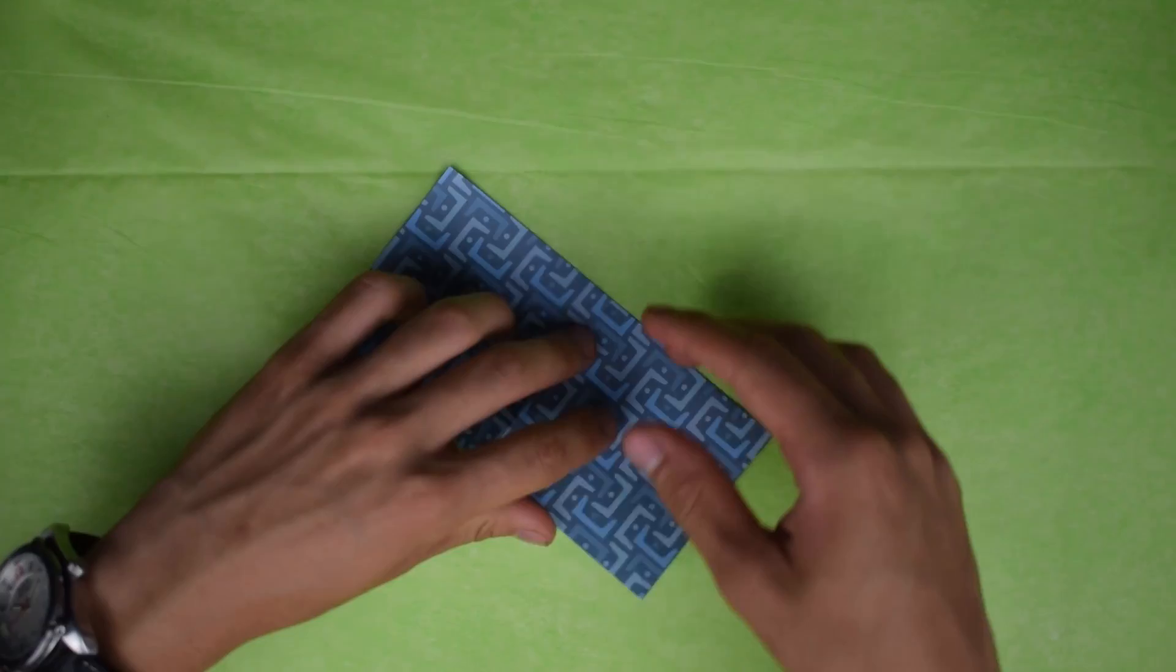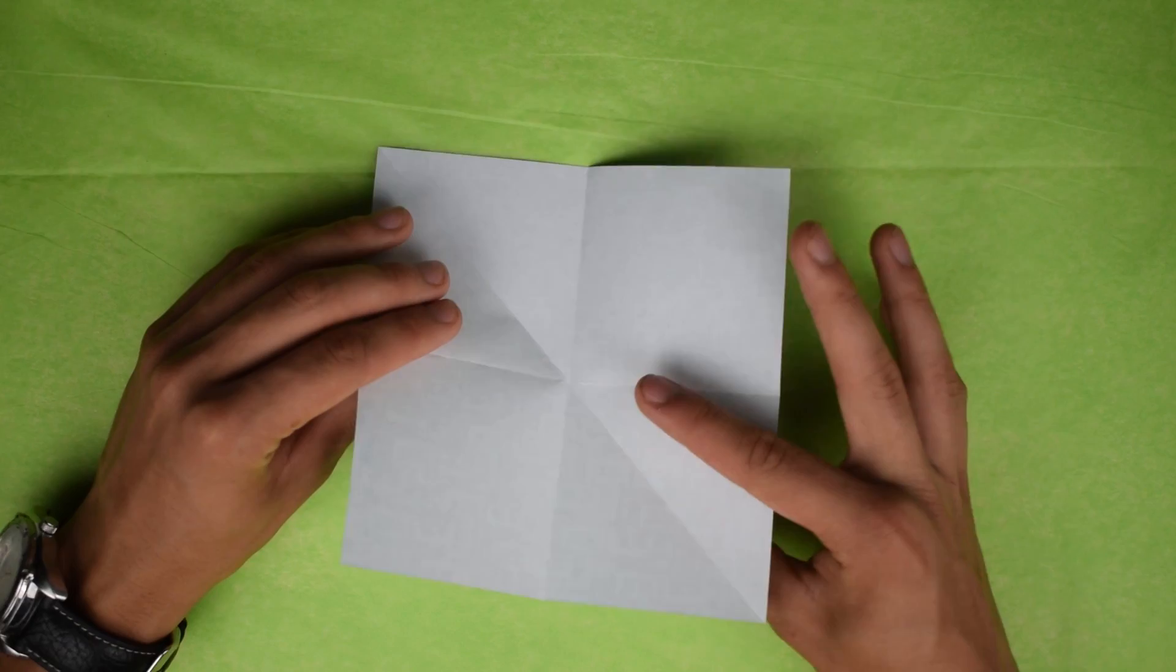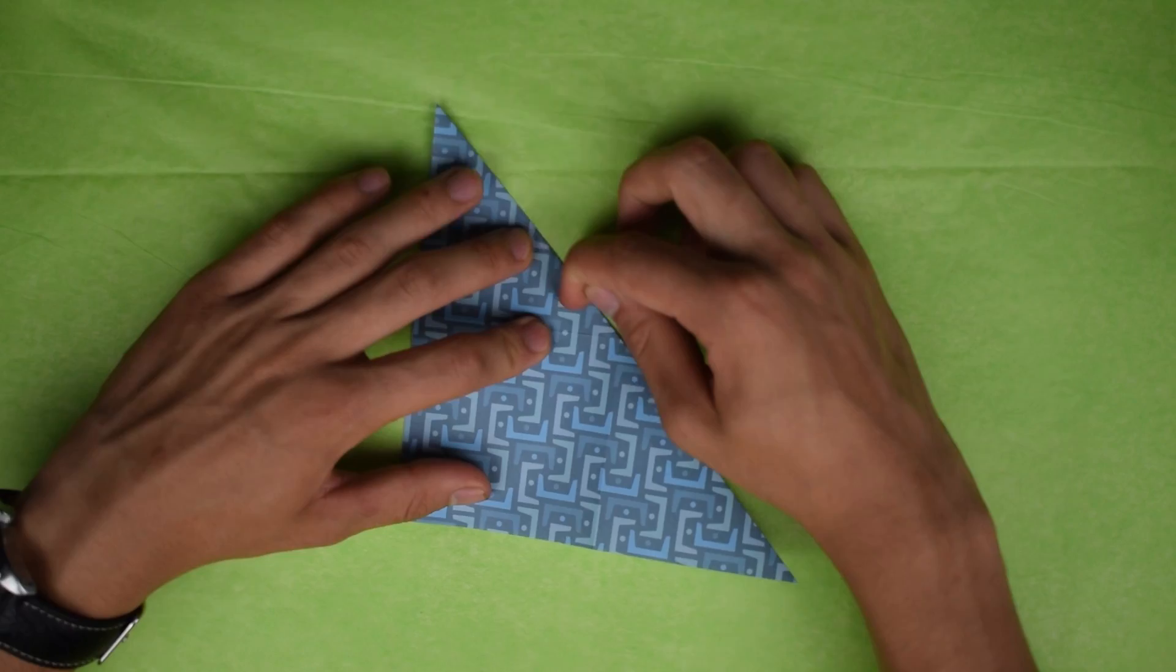Alright, so now I fold it in half both ways and now we're going to fold in the diagonals. So we're going to fold corner to corner, just like that, this way.